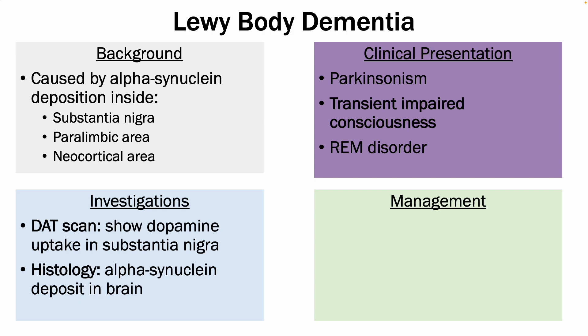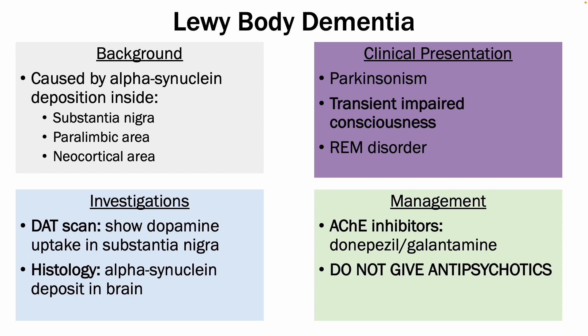In terms of management, you can give acetylcholinesterase inhibitors, such as donepezil and galantamine. However, it's very important not to give antipsychotics to patients with Lewy body dementia, as giving antipsychotics can result in neuroleptic malignant syndrome.